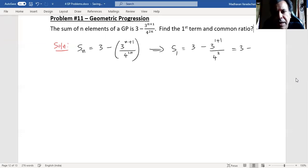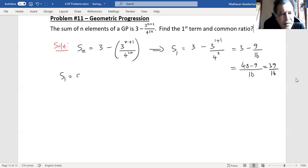This will give us 3 minus 3 squared. 3 squared is 9, 4 squared is 16. That means if I take LCM as 16, then it is 48 minus 9, which will give us 39 by 16. That is S_1, which is nothing but the first term. So our first term becomes 39 by 16.